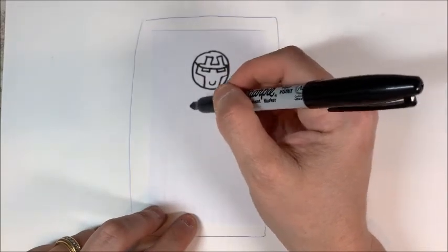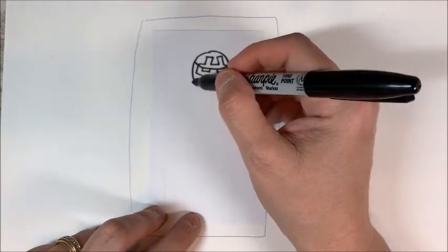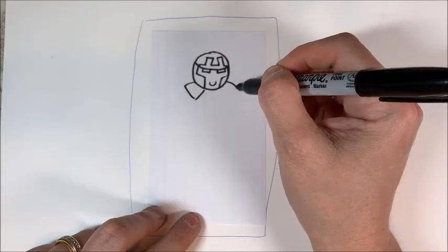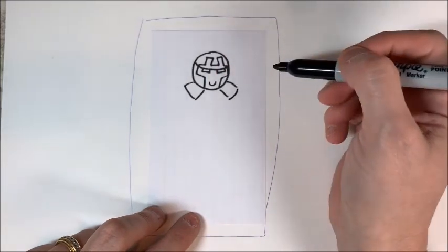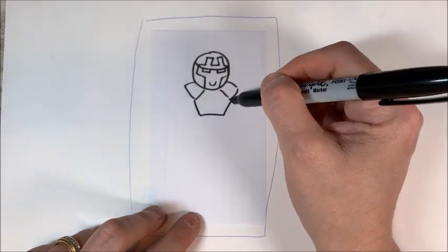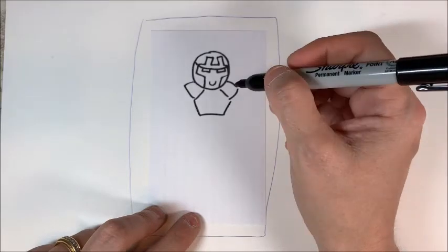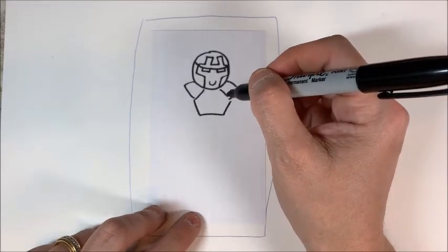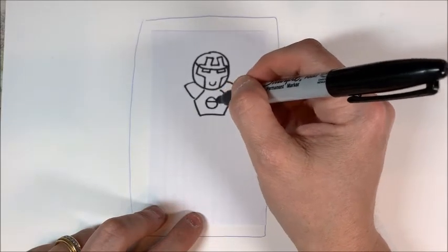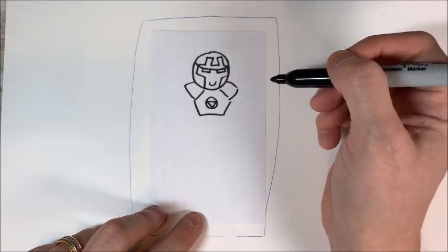Now we can't draw his arms coming straight out of his head because he does have these big shoulder pauldrons. So we have to draw those first, and then we have to draw this part of his armor, the chest part of his armor, before we can really start drawing anything else. There's a circle here too with his arc reactor in it.